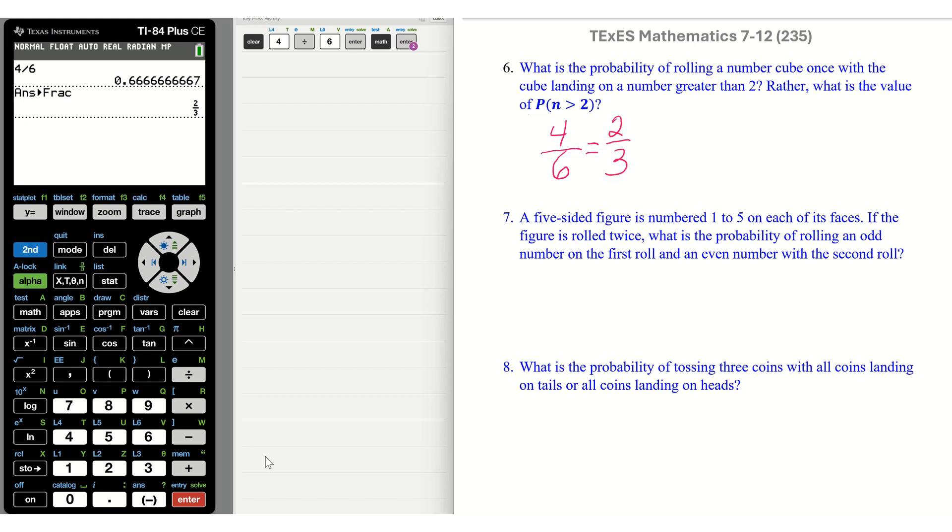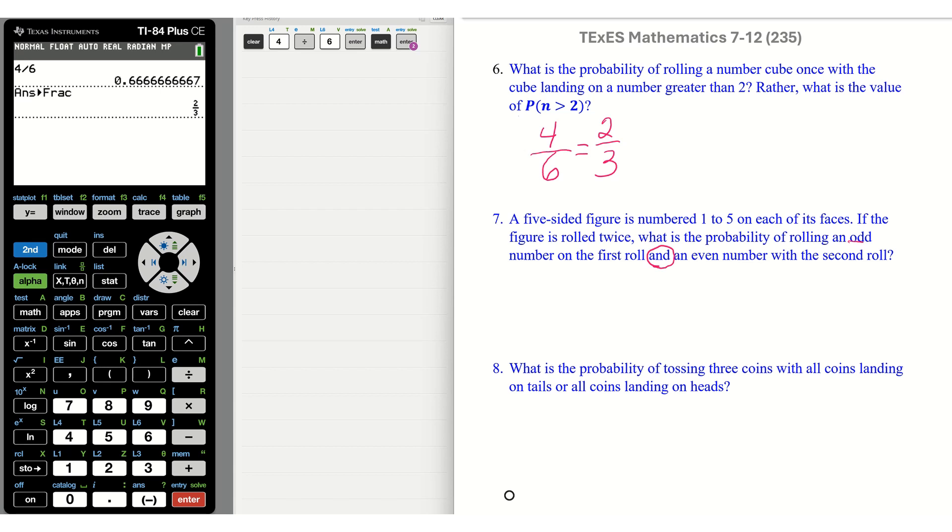Okay. Number seven. A five-sided figure is numbered one to five on each of his spaces. If the number is rolled twice, what is the probability of rolling an odd number on the first roll, and an even number on the second roll? Okay, I know that I'm going to multiply. I see the word and, and my first roll needs odd, and my second roll needs even.